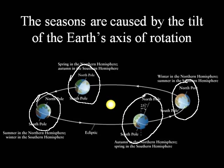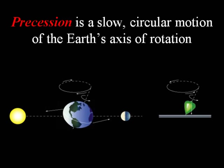Some folks think that the Earth tilts back and forth, but of course not. The Earth is pointed in the same direction in space, so that at some times the axis is tipped toward the sun, and six months later is tipped away from the sun. So the seasons are caused by the Earth's tilt.